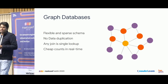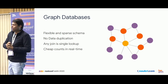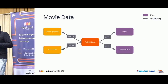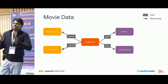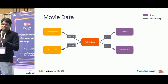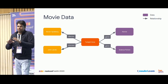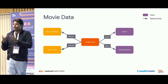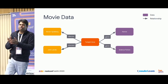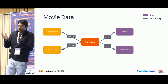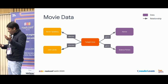Graph databases seem to solve all the problems — so why aren't they being used? If we convert that movie data relationship into a graph format, it looks exactly like a graph. So if data naturally becomes a graph, why can't we store it in a graph database?